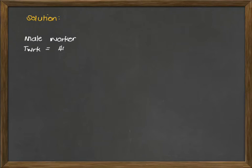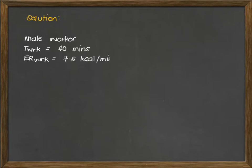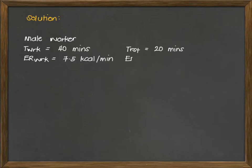Our given values: the working time is 40 minutes. Since the shift is 4 hours in the morning and 4 hours in the afternoon, each hour the partition is 40 minutes working and 20 minutes resting. So 40 minutes working and 20 minutes resting. During the 40 minutes that he is working, his energy expenditure rate is 7.5 kcal per minute, and the resting energy expenditure rate is 1.5 kcal per minute.